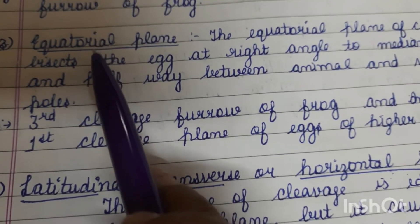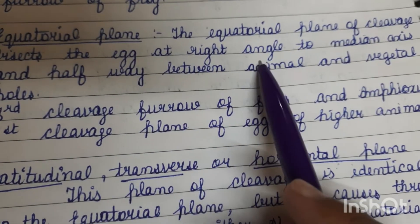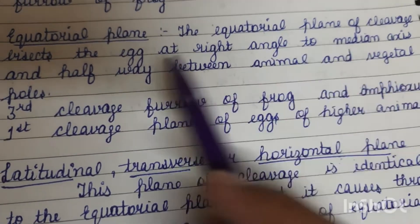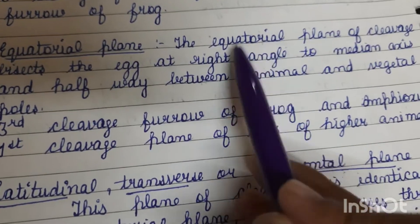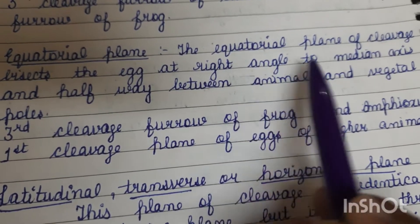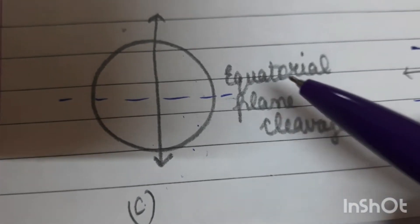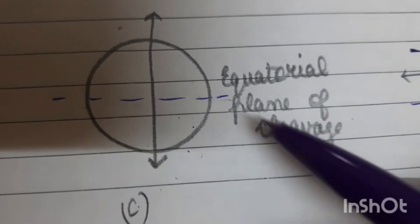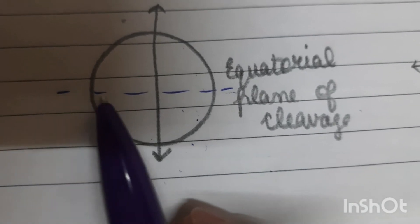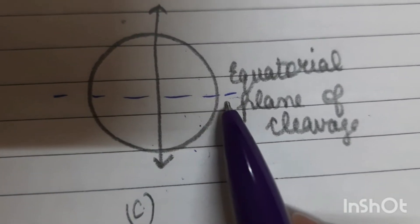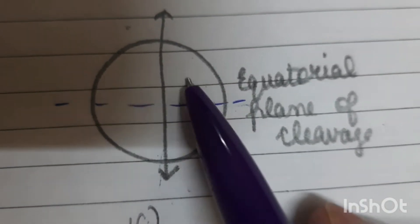Next, the third type is the equatorial plane of cleavage. The equatorial plane bisects the egg at right angles to the median axis, halfway between the animal and the vegetal poles. Here is the diagram representing the equatorial plane of cleavage — the cleavage bisects the egg at right angles to the median axis, halfway between the animal and vegetal poles.